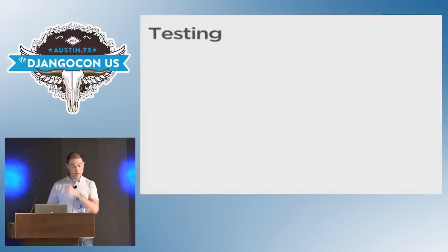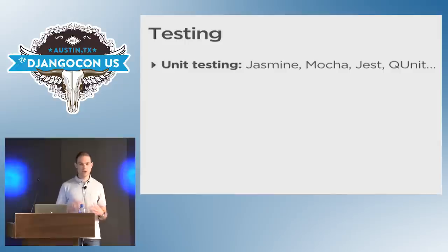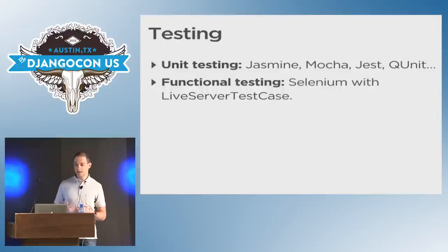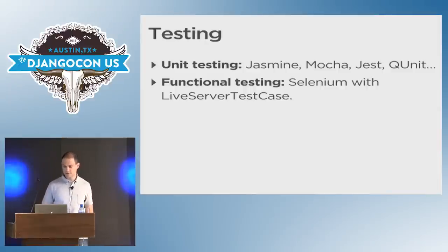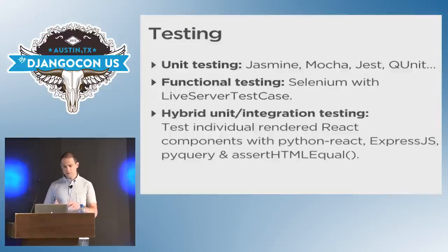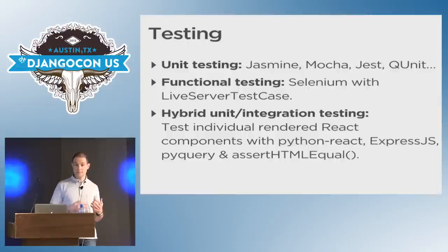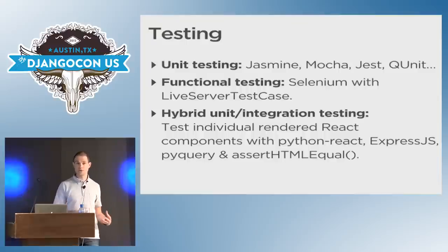Finally, I also wanted to talk about testing. A good test suite should contain some unit tests — for that you could use JavaScript frameworks like Jasmine, Mocha, Jest, or QUnit. I also recommend doing functional testing, for which you can use Selenium with Django's test case support. Stick around because there's a talk right after this covering some of those topics. I also wanted to cover one particular method which is a hybrid between unit and integration testing — using the same tools as I was describing for server-side rendering, even if you don't really care about SSR, you can use the same tools to do some amount of testing.